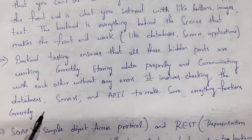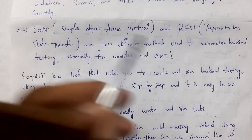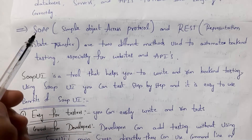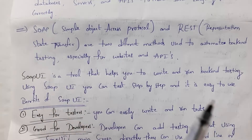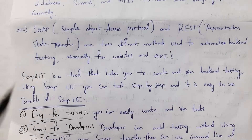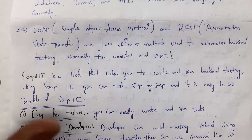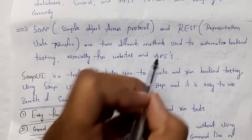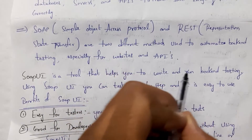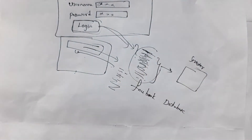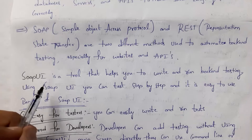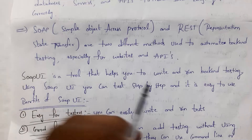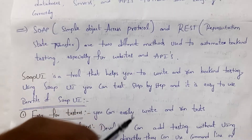Backend testing involves checking databases, servers, and APIs to make sure everything functions correctly. By using the SOAP method and the REST method we can automate backend testing. SOAP stands for Simple Object Access Protocol, and REST stands for Representational State Transfer. These two methods are mainly used to automate backend testing on websites and APIs. API stands for Application Programming Interface. There is one tool called SOAP UI that allows us to write and run backend tests.